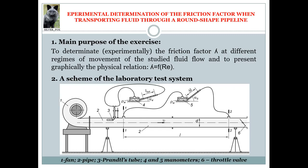Position 1 presents the fan, which after being turned into operation aims to ensure the studied fluid flow — in this case an airflow. Position 2 is the straight pipe used to transport the air. Position 3 indicates the so-called Prandtl tube, representing a classical basic device that measures velocity. Positions 4 and 5 indicate the two manometers connected to specific points of the studied system.